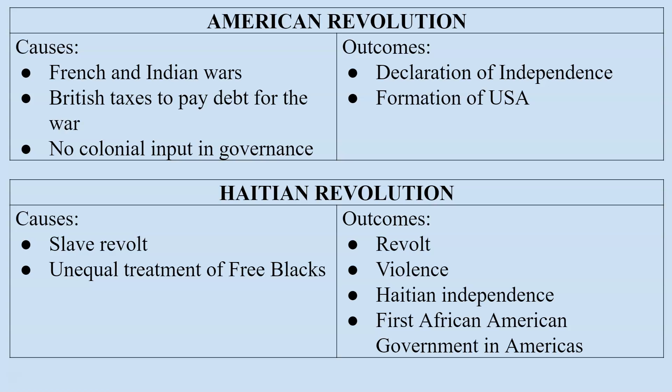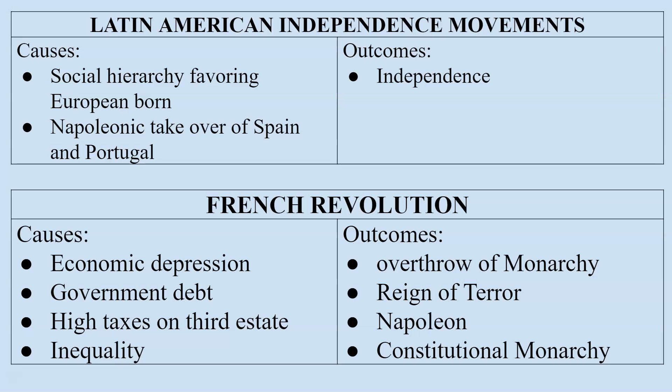Haiti began as a slave revolt, but there was also the underlying issue that many free Blacks in Haiti were treated as second-class citizens by whites. It became a very violent revolution, and Haiti eventually became independent — the first African-led government of the Americas. Latin American independence movements grew out of a social hierarchy that favored the European-born. The spark came when Napoleon took over Spain and Portugal and installed his brother on the throne; the people of Latin America refused to accept that, and the Spanish authorities could do nothing to stop it.